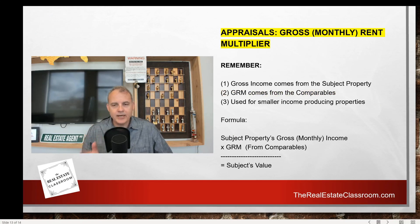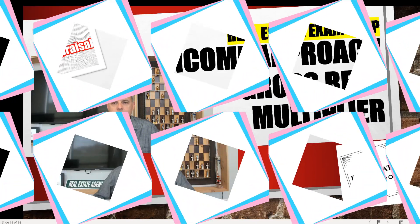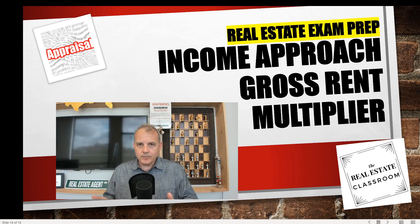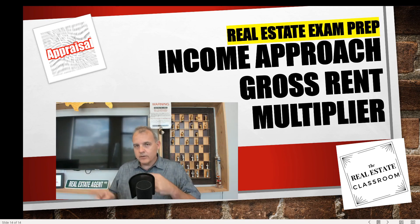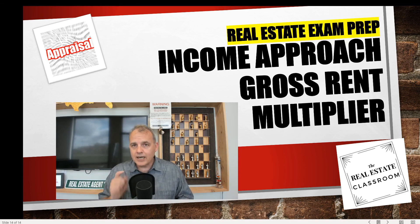That's the formula. Remember: gross income comes from the subject property; the GRM comes from the comparables. This method — the GRM — is for small residential income-producing properties, from a single-family home up to a fourplex. Don't forget the three approaches to valuation: the sales comparison approach, the cost approach, and the income approach. The income approach has two methods: the gross rent multiplier, which we covered here, and the capitalization method, which is the next video. If you haven't subscribed to the channel, please do so. I'll see you in the next video.